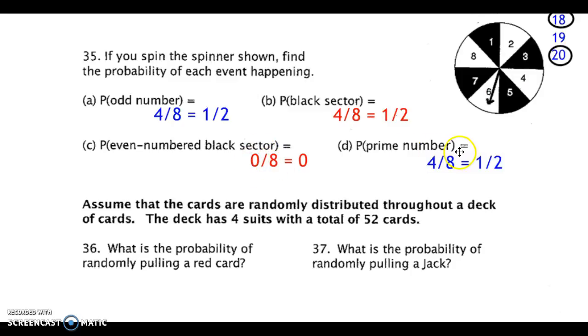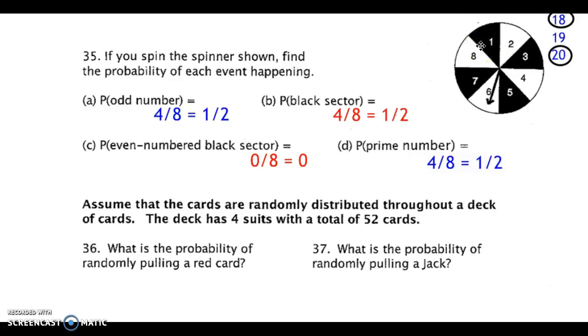For prime numbers, we identified 2, 3, 5, and 7 as prime numbers. If you're curious as to why 1 is not a prime number, maybe you should Google that.